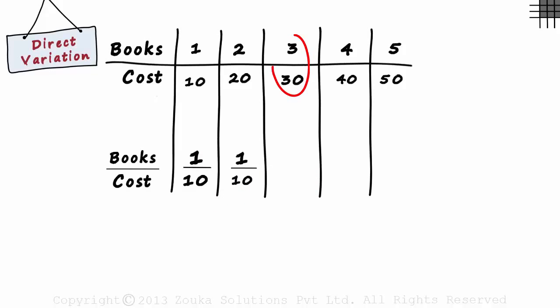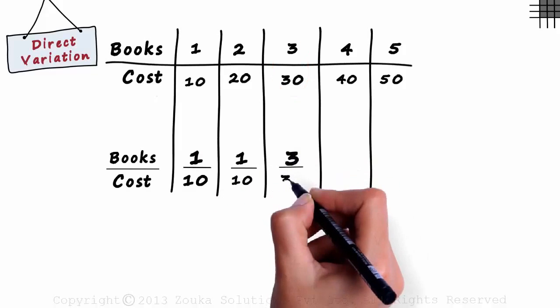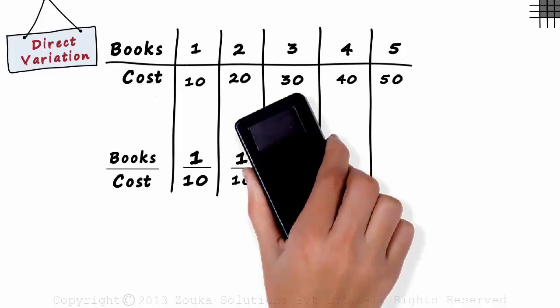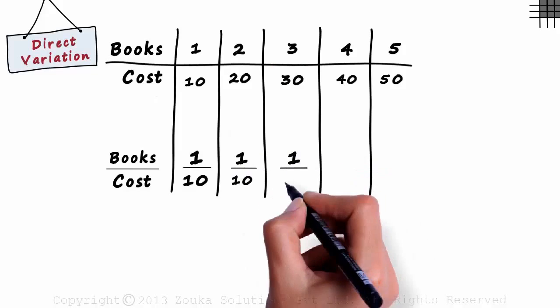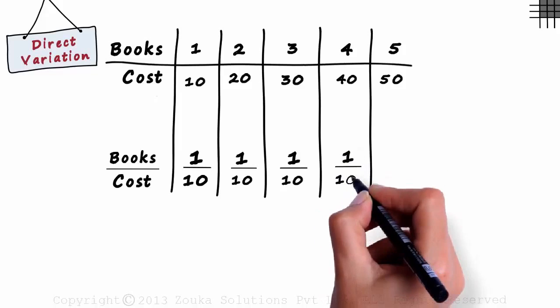In the third case, the ratio is 3 by 30. This can again be reduced to 1 by 10. And similarly, in all the cases, the ratio will be 1 by 10.